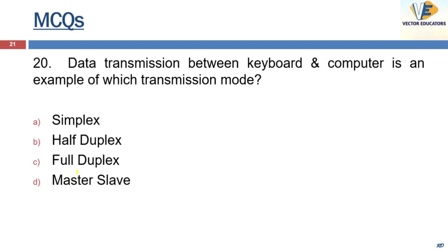Data transmission between keyboard and computer is an example of which transmission mode? The answer is simplex — that means the communication is unidirectional.